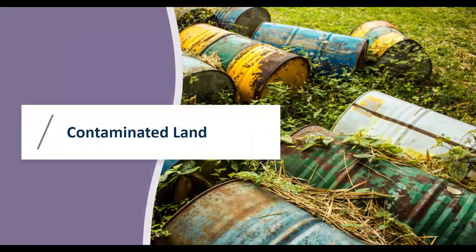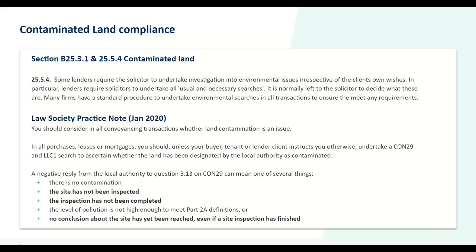Today I'm going to start with contaminated land. Contaminated land is a long-standing risk that needs to be taken into account in the conveyancing process. You have the local authority search, the CON 29, which contains questions as to whether an entry relating to the land appears on the local authority's contaminated land register. It's usually a yes or no question — not the most detailed, not the most property specific.